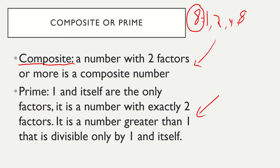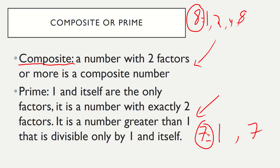A prime number is one where one and itself are the only factors. It is a number with exactly two factors — a number greater than one that is divisible by only one and itself. Let's look at the number seven. Nothing else can divide into seven besides one and seven, so those are my two factors. Seven is an example of a prime number.